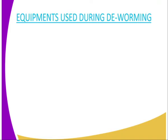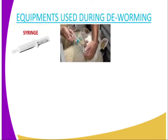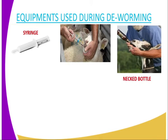Now we look at the equipment used during deworming. The first one is the syringe, where the dewormer drug is placed and put into the mouth of an animal. As you can see, it is well illustrated here — there is a sheep being treated, where the dewormer is administered to control worms. You can also use the neck bottle, where the drug is dissolved in water and introduced into the mouth of the animal.